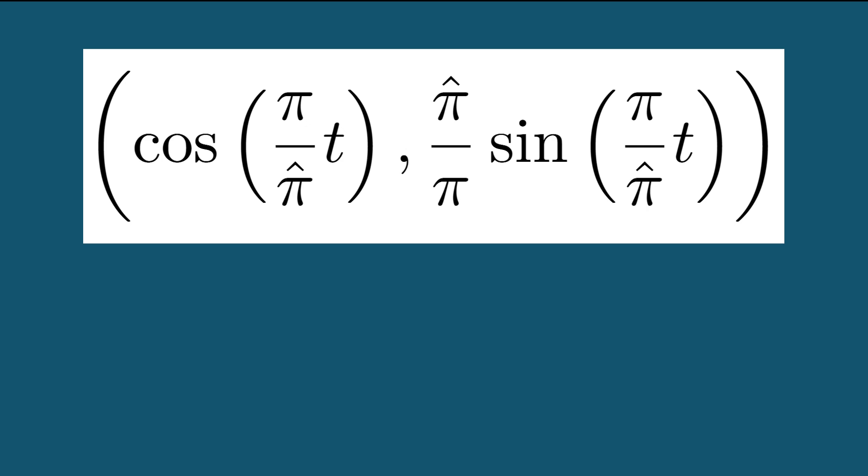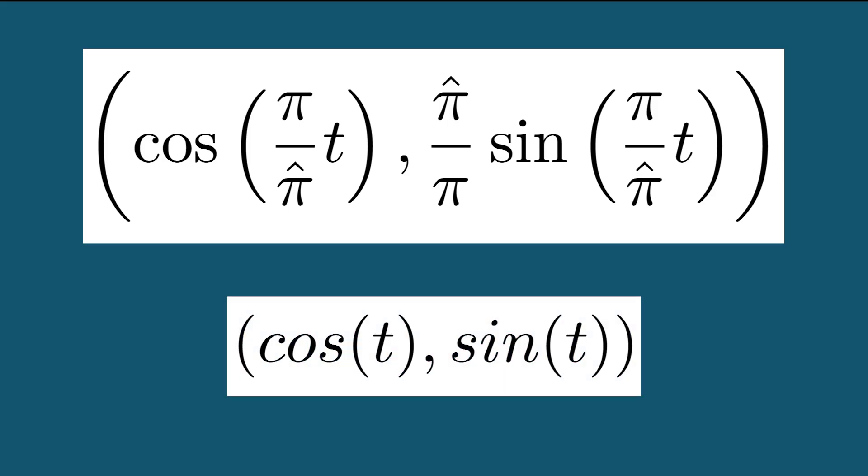When we set pi hat equal to exactly pi, this will simplify to cosine of t, sine of t, which is the familiar unit circle in standard Euclidean geometry.